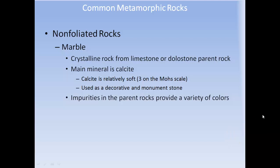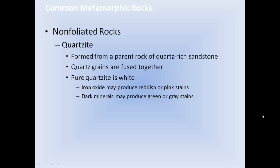Non-foliated rocks. Marble: a crystalline rock formed from limestone or dolostone parent rock. The main mineral is calcite, which is relatively soft at 3 on the Mohs scale. It is used as a decorative and monument stone. Impurities in the parent rock provide a variety of colors — the veins you see in marbles.